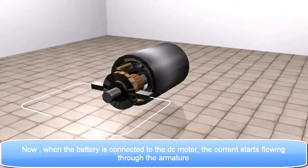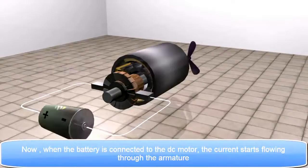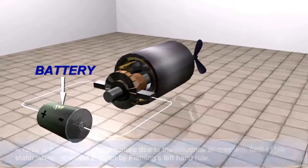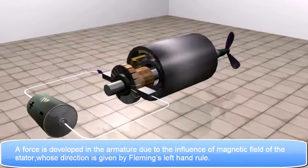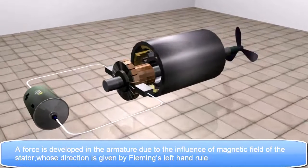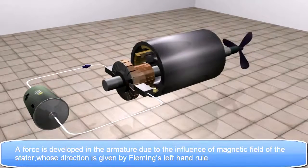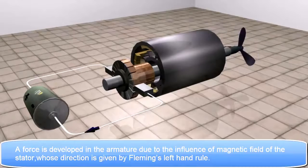Now, when the battery is connected to the DC motor, the current starts flowing through the armature. A force is developed in the armature due to the influence of magnetic field of the stator, whose direction is given by Fleming's left hand rule.